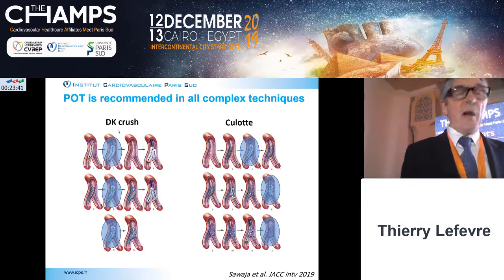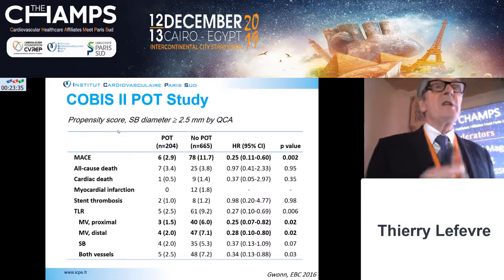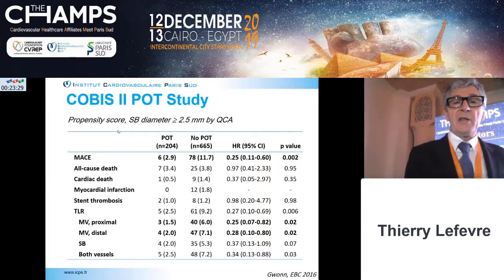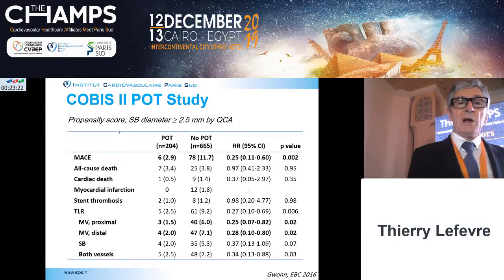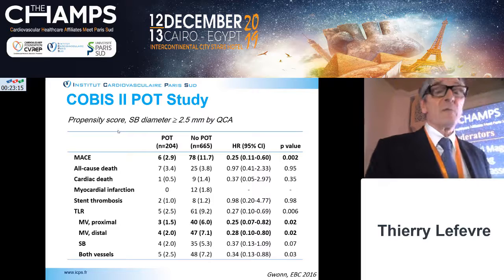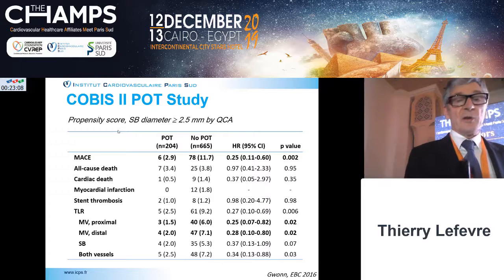Looking at clinical data: from COBIS-2, a large Korean national registry comparing POT versus no POT — not randomized, but with a side branch of 2.5 mm — the MACE rate was divided by 4: POT 2.9% versus no POT 12%. Very important information. However, at that time, POT was used in only one quarter of patients.